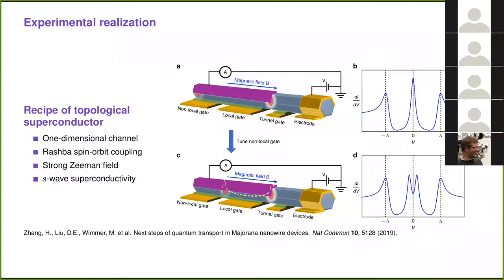If the wire is short enough, the peak splits apart, and this has been demonstrated experimentally. There are many other platforms for realization of topological superconductivity, for example involving proximity effect of a superconductor with a topological insulator, or a chain of magnetic atoms on the surface of an s-wave superconductor, but all of them involve superconductivity explicitly.